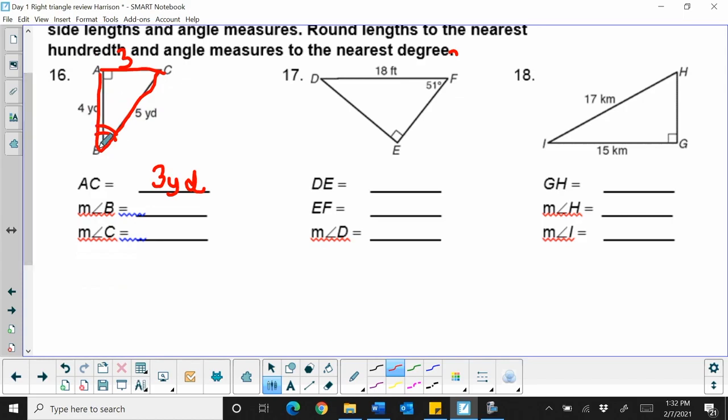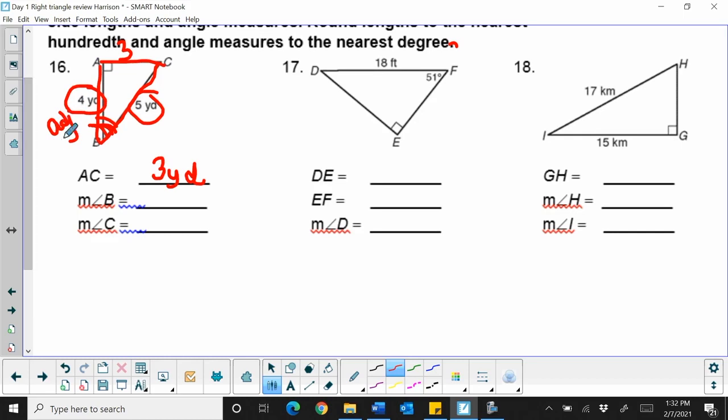But I'm going to look at angle B and I'm going to take the two given sides, 5 and 4. 5 is my hypotenuse, and 4 from angle B, that's my adjacent leg. So if I have adjacent and hypotenuse, which trig function would I use?